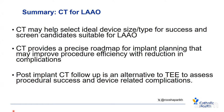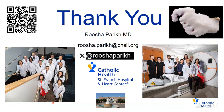In summary, CT for left atrial appendage occlusion: CT can help select the ideal device size and type to screen candidates suitable for LAA occlusion. CT provides a precise road map for implant planning that can improve procedural efficiency with a reduction in complications. Close implant CT follow-up is a good alternative to TEE to assess procedural success and device-related complications. Thank you so much — we can open for questions.